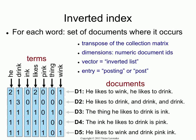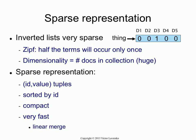The basic data structure is really, really simple. These lists, these column vectors, are very, very sparse.